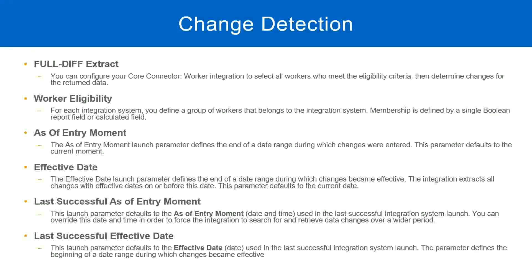It can be any criteria — a manager, a supervisor, etc. The eligibility criteria will say 'employees in North America.' We have to define that eligibility criteria. The eligibility criteria is a true-false field — a boolean field — where you can configure all the options. You can create a calculated field or use an existing one to define the worker eligibility. For all workers it will be either true or false: either you are eligible for this integration or you are not.